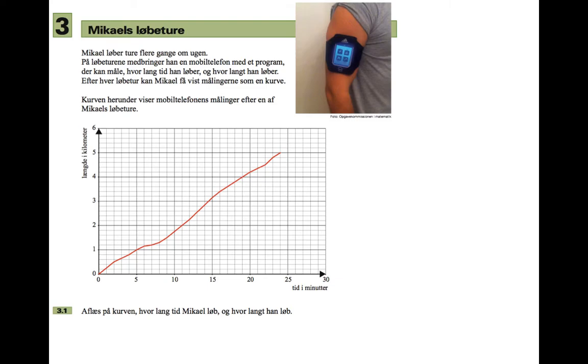Here's a question from May 2013, question three. It's all about speed, time and distance, called Mikel's running trip. It says Mikel runs several times a week. On his running trip he takes a mobile phone with a program that can measure how far he runs and how much time he spends running. After each running trip, Mikel gets the measurements shown on a curve, and there's an example of such a curve here.